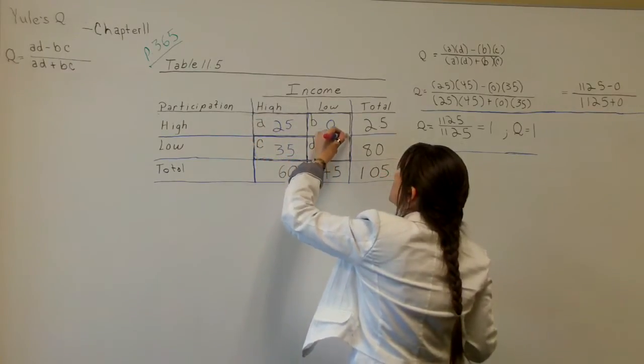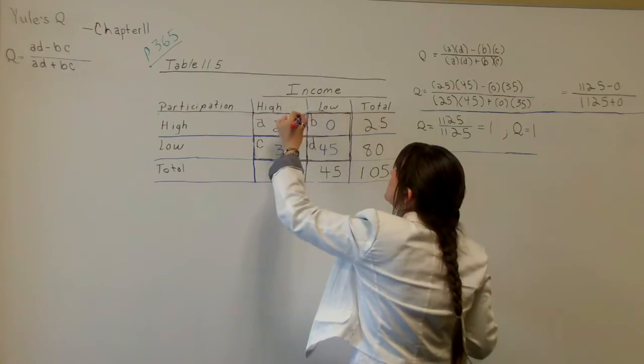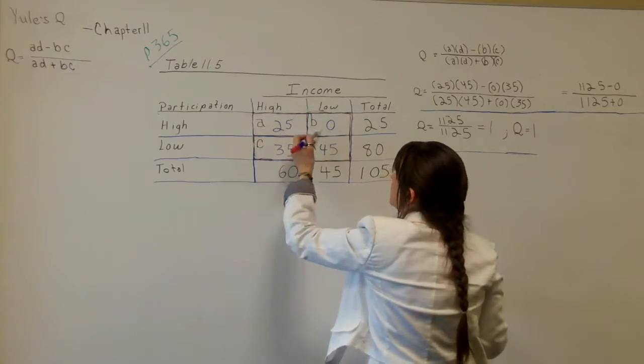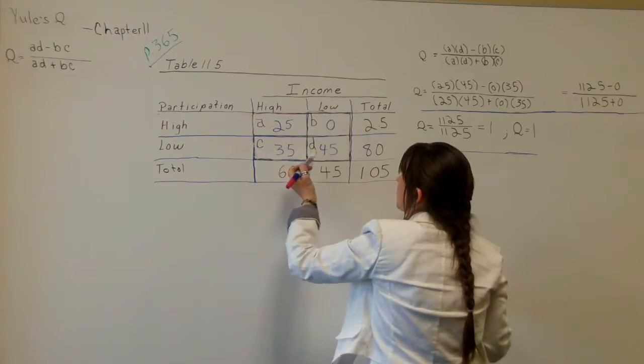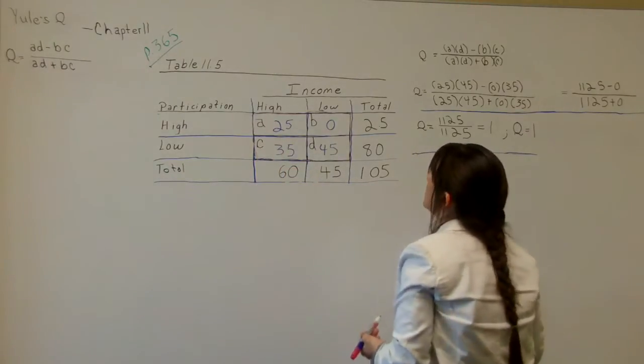These are the numbers where your A, B, C, and D are located. Notice I have them labeled: A is 25, B is 0, C is 35, and D is 45. This is from your textbook.